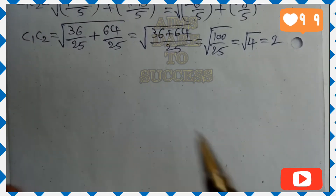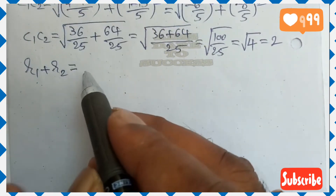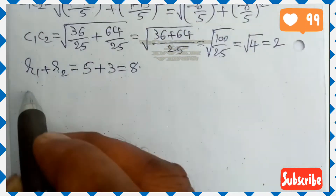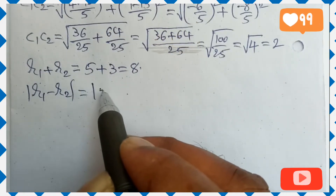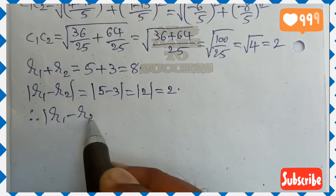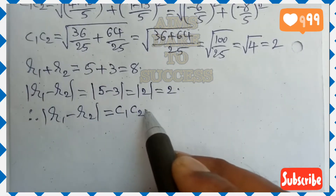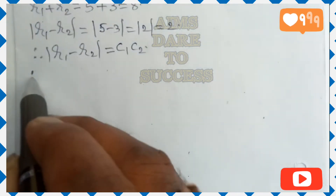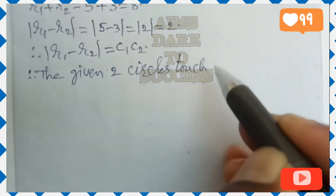Now checking the r₁ and r₂ relation: r₁ + r₂ = 5 + 3 = 8. Since r₁ + r₂ is greater than C₁C₂, we also check |r₁ − r₂| = |5 − 3| = 2. Since |r₁ − r₂| = C₁C₂ = 2, and this is less than r₁ + r₂, we use the condition |r₁ − r₂| = C₁C₂. This means the two circles touch each other.